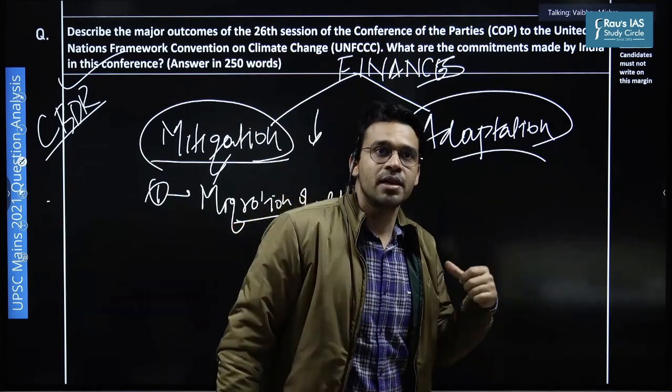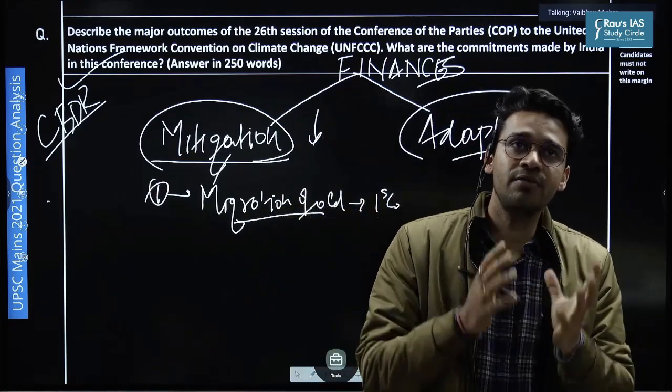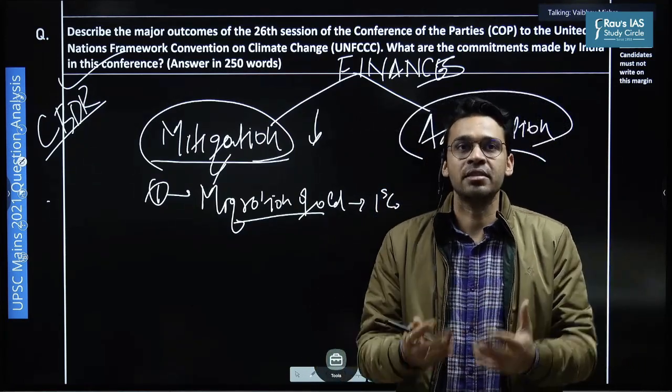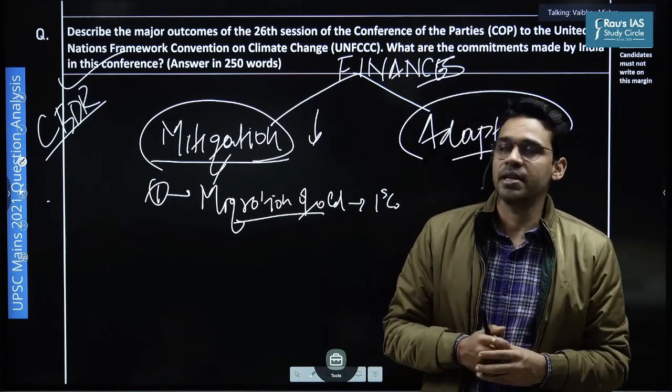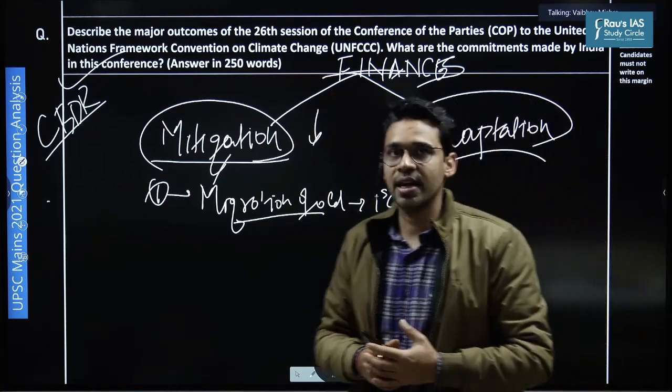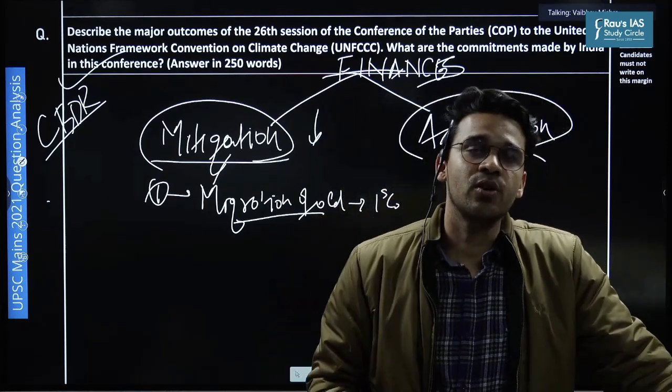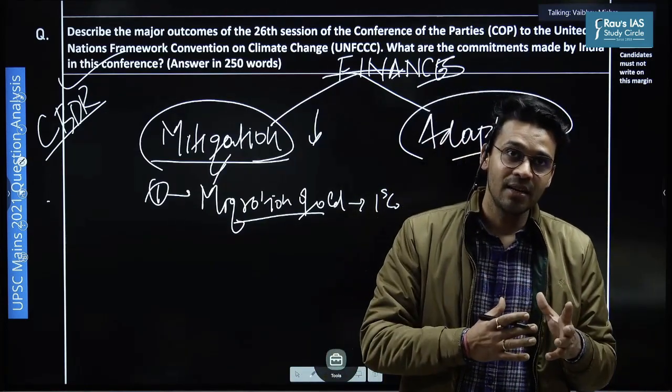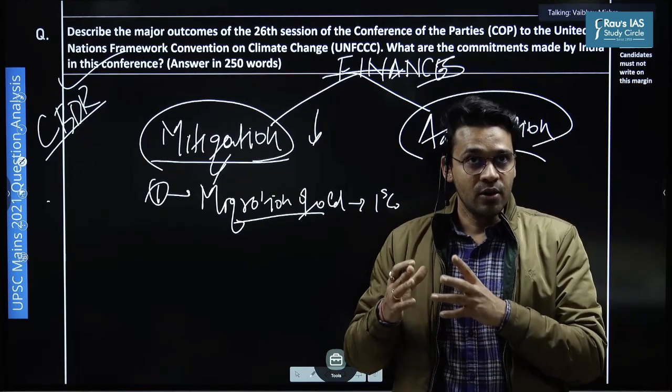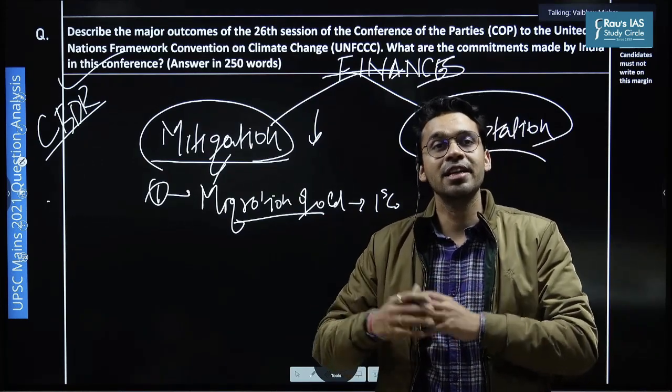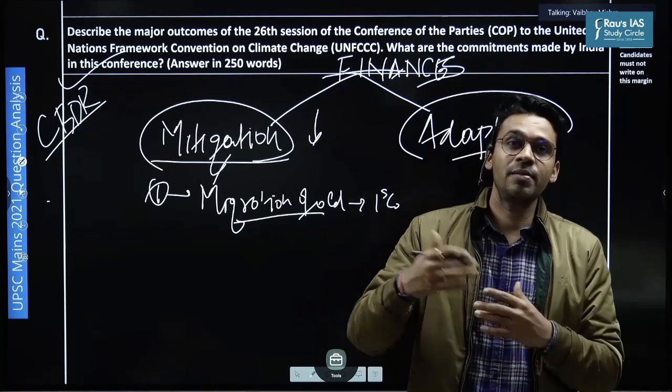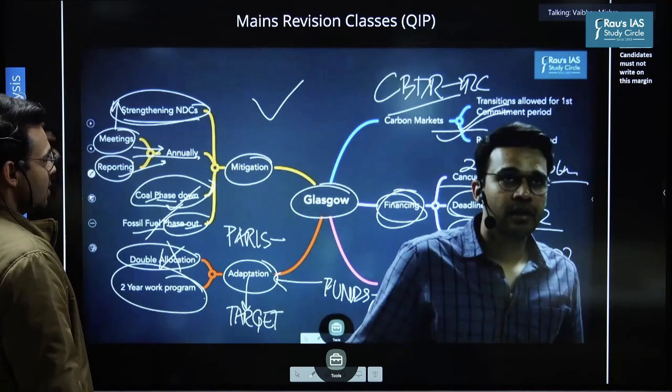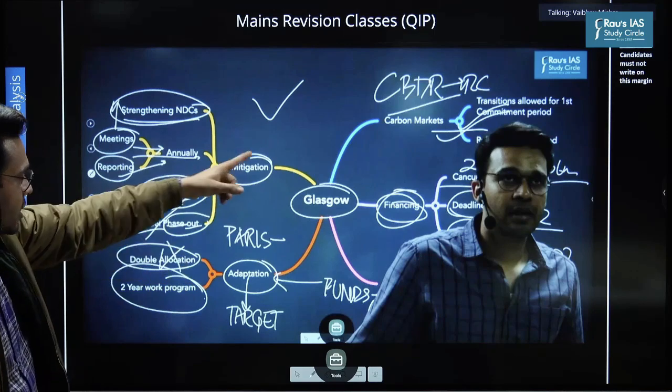When it comes to adaptation, you do not have a quantitative targets like you have in case of mitigation. So for the first time, the countries decided that now it's time to quantify the adaptation goals as well. For which they have formulated a committee which will meet and next year they will come up with the commitments. Similarly in finance, we know that in 2009 countries agreed at Cancun that they are going to finance $100 billion per annum. But if you look at the global contribution, it is not $100 billion in total. And what they committed was $100 billion per annum. So these were the various aspects. There were other dimensions as well.